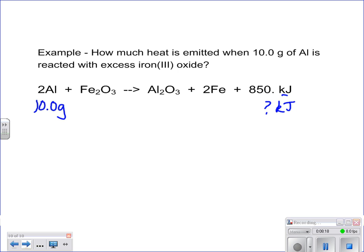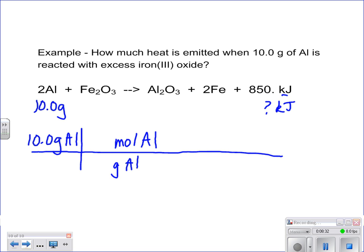So now I'm going to start with my 10 grams of aluminum. I'm going to get rid of my grams of aluminum, and I'm going to go to moles of aluminum. It doesn't matter what that coefficient is right there. I don't play with that right now. I'm just going to say one mole of aluminum has a mass of 26.98 straight from the periodic table.